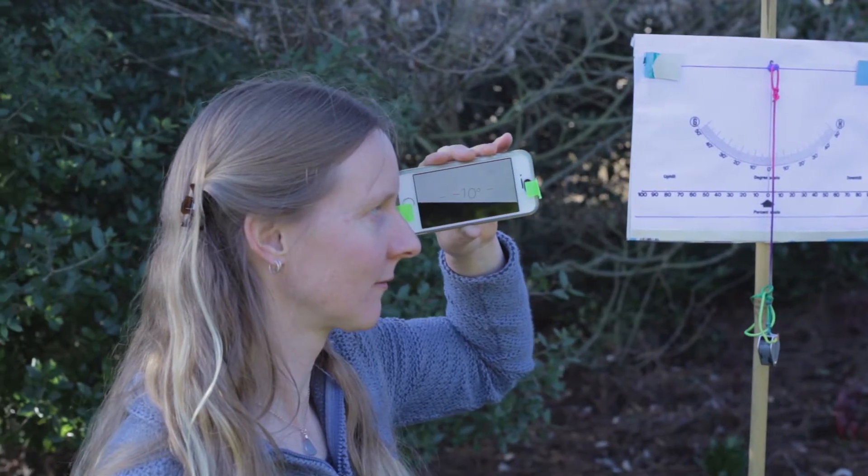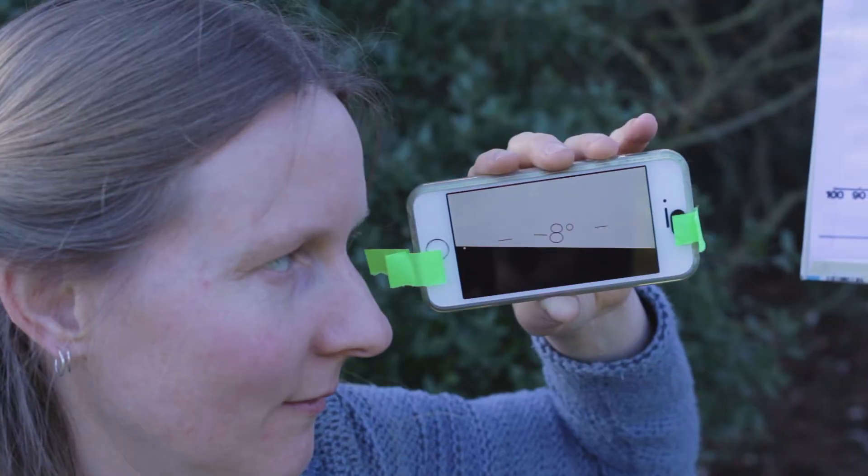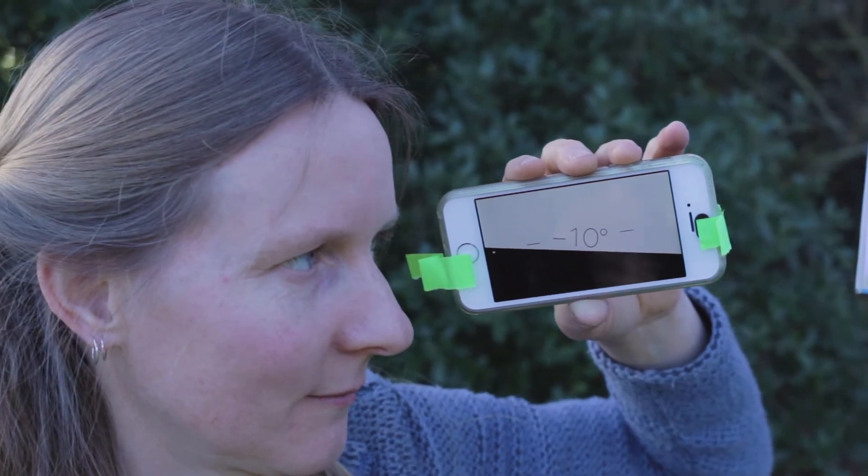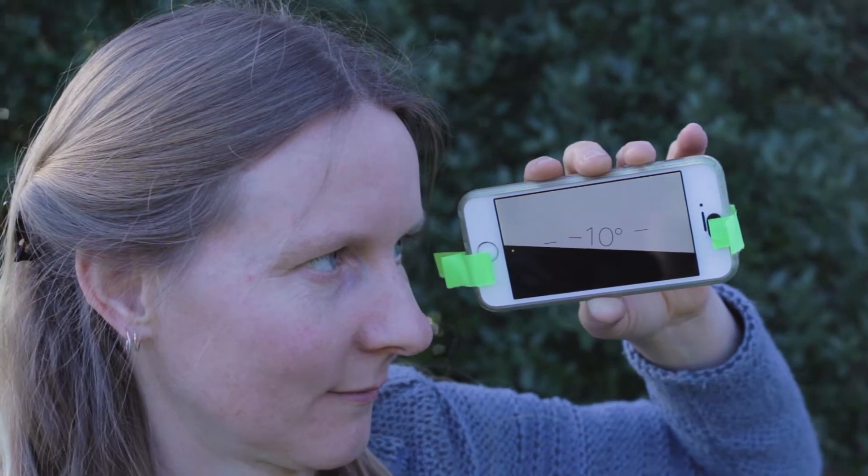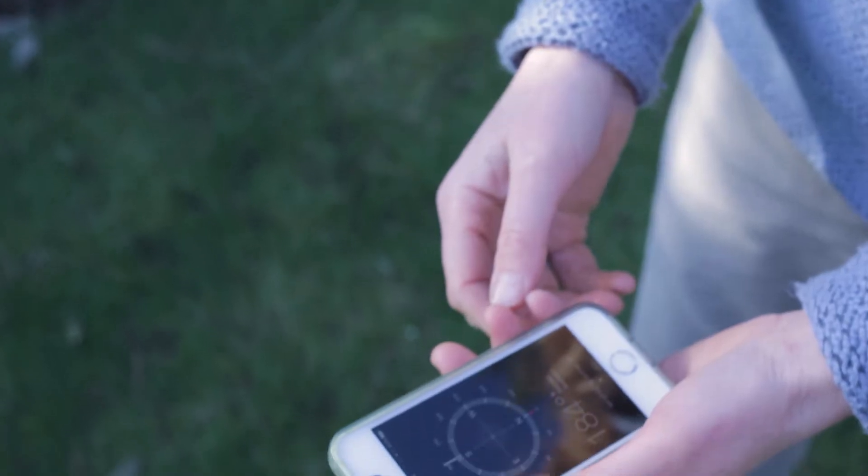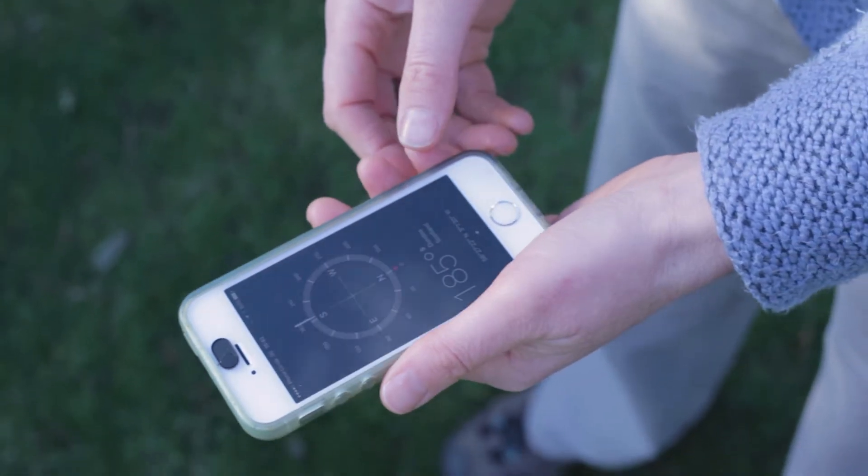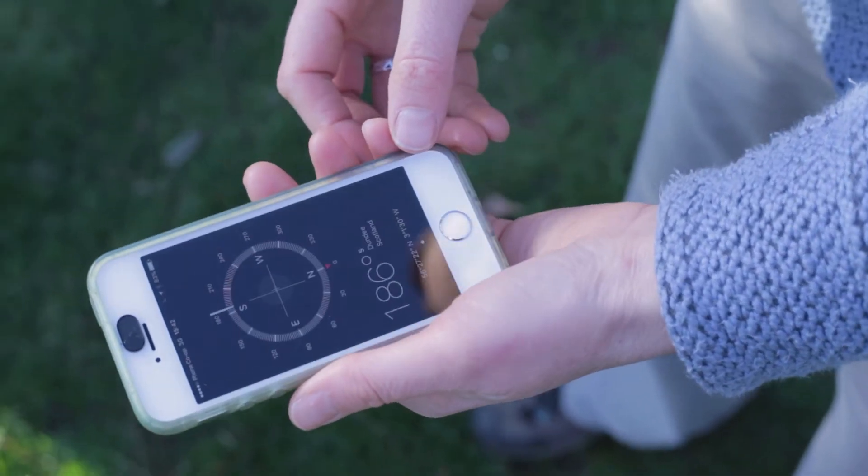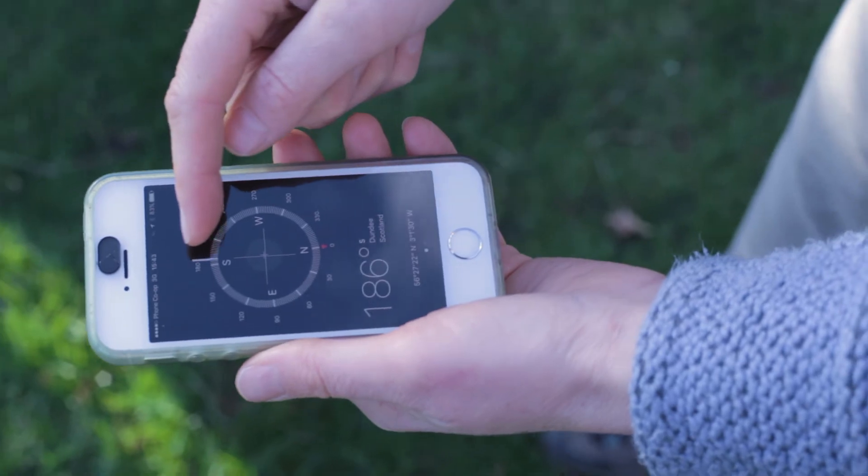We can use the same principle using a smartphone with a levelling device. Simply make two marks in the middle of your phone and get a friend to read off the slope angle from the side. If you have a compass or a smartphone app with a compass, simply line up so that you're facing down your slope and read off the angle.